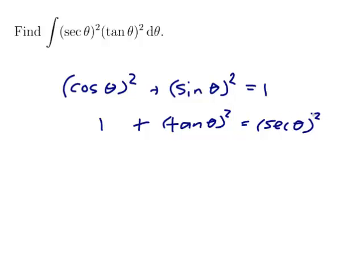So I could replace that sec theta with a 1 plus tan squared, but then I get tan squared plus tan to the 4. That doesn't seem at all helpful to me. Maybe there's a different way that tan and sec are related.